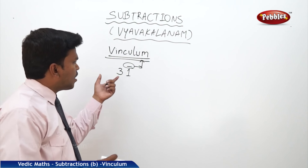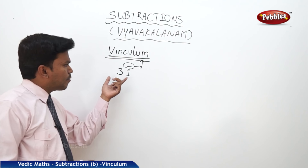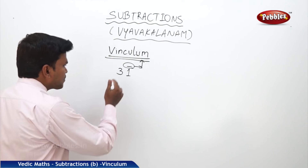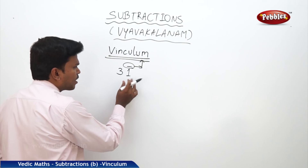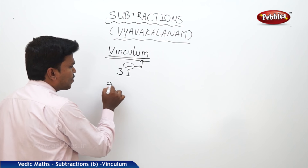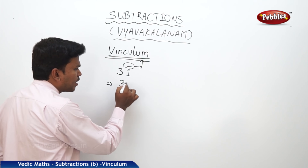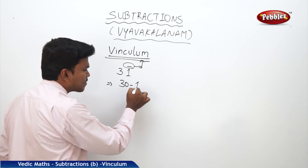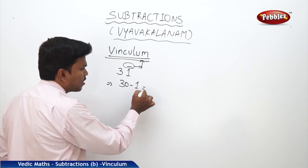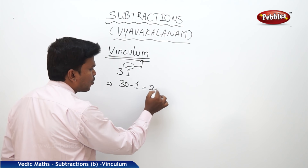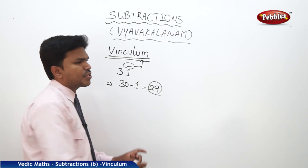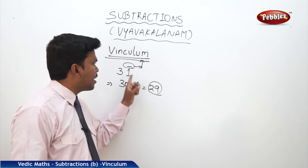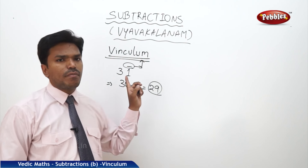So, what is the purpose of this number? 3, 1 bar means 3 is in the tens place, so that is 30. 1 bar is nothing but minus 1. So, what is 30 minus 1? That is 29. The actual number is 29, but we are representing it in the form of vinculum.